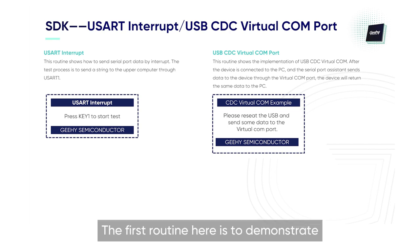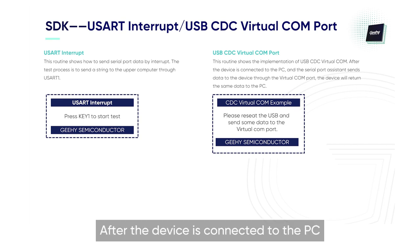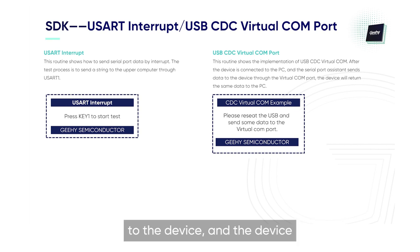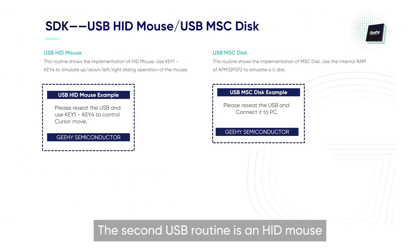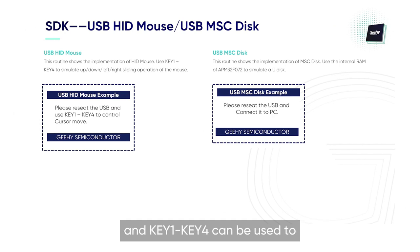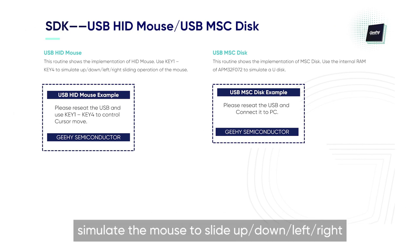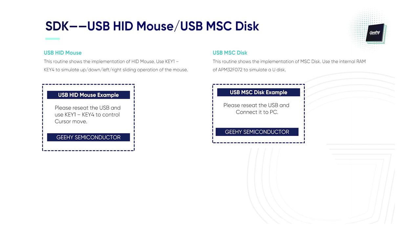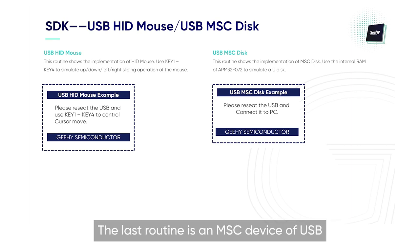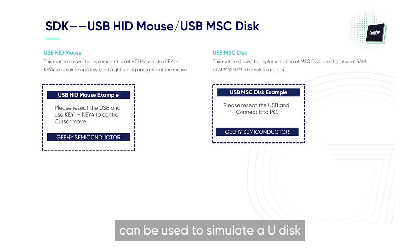The final is a USB routine. The first routine demonstrates how to use USB CDC Virtual Comm. After the device is connected to the PC, data can be sent from the serial assistant to the device, and the device will return the same data to the PC. The second USB routine is an HID mouse, and keys 1 to 4 can be used to simulate the mouse sliding up, down, left, and right. The last routine is an MSC device of USB, and the internal RAM space of APM32F072 can be used to simulate a USB disc.